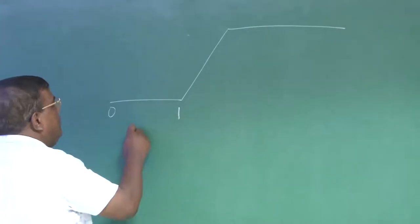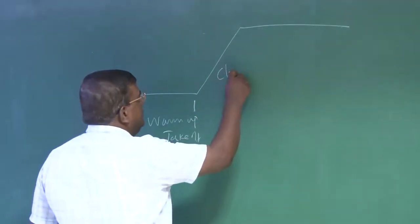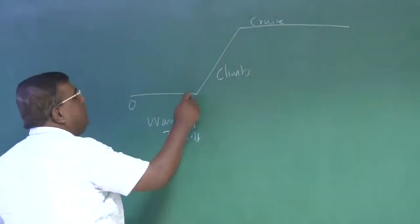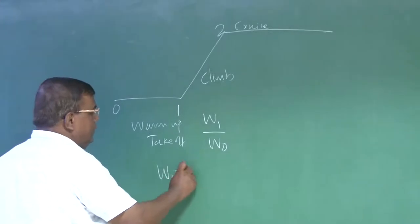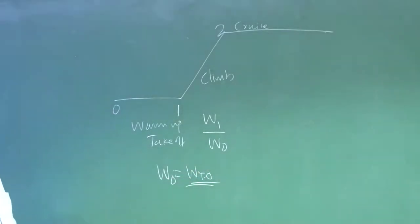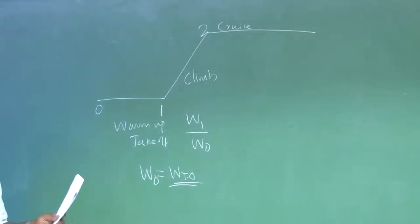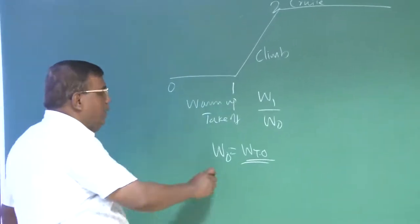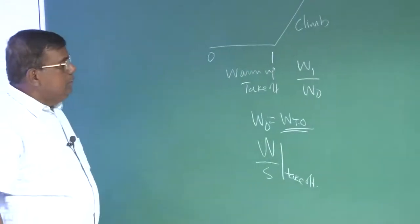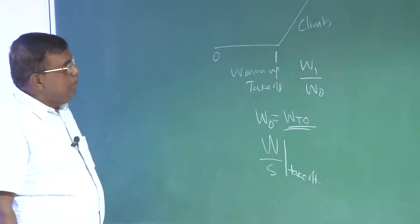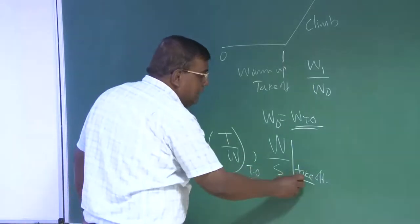If you see, this is our warm-up and takeoff, this is climb, and this part is cruise — this is the mission profile. If I put 0, 1, and 2, you have seen W1 by W0. In this case, W0 is W takeoff. For a designer, it is important to arrive at some number W takeoff, because that becomes the weight from which he tries to find out W by S takeoff — the basic parameter with which he starts designing the airplane. Similarly, we will be talking about T by W takeoff, under takeoff conditions.